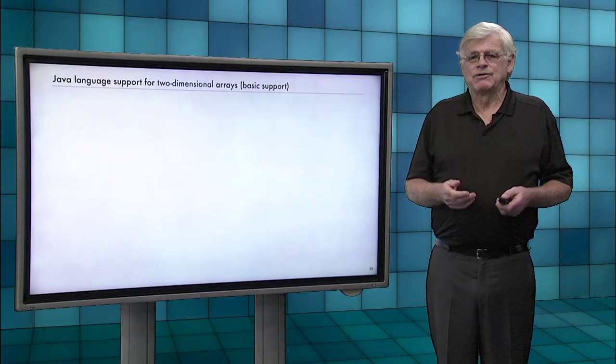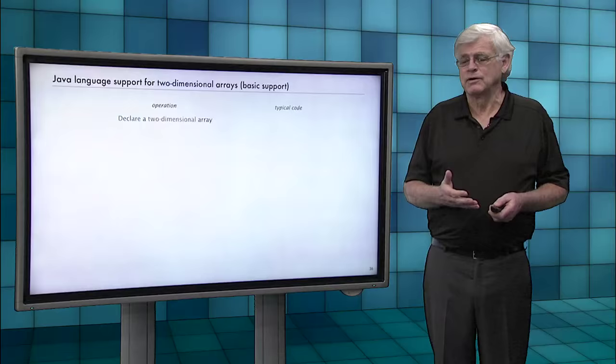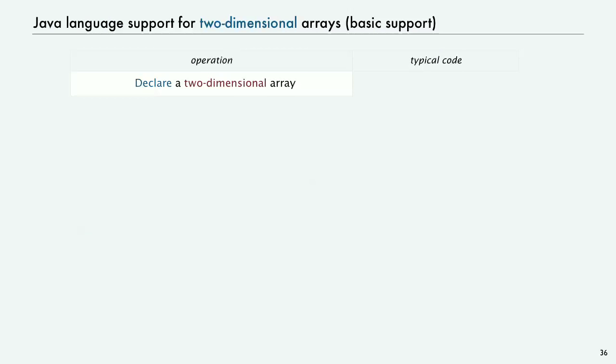So Java also has language support for two-dimensional arrays. Again, basic support that extends the one-dimensional array support in a natural way. So to declare a two-dimensional array, we put a sequence of two open and closed braces. That says A is going to be a two-dimensional array of values of type double. To create one of a given size, we put numbers in there and we use the new construct. If A has been declared, this says create a new two-dimensional array, a thousand by thousand array.